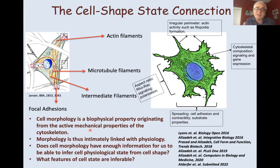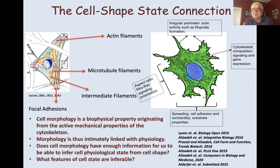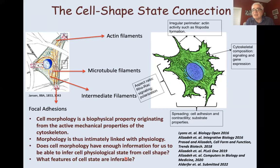And what features of cell state are inferable? Cell state is a very broad term — in the most general sense, you could imagine the mapping between state and morphology is definitely going to be many-to-one. But is there enough information in morphology for us to have a meaningful inverse mapping? This is an empirical question, and that's what we basically ended up doing — we did some experiments.